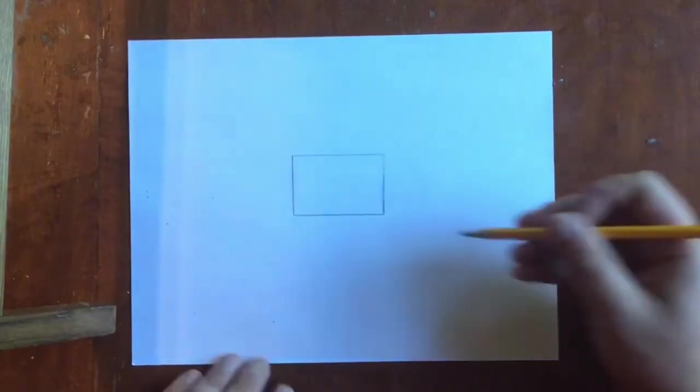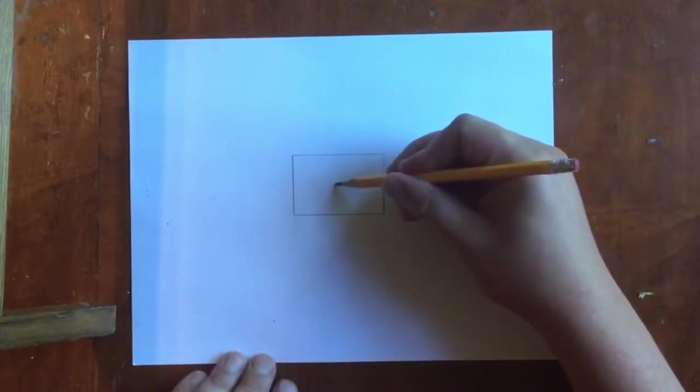The next thing we're going to do is put a dot in the middle of our paper. This is called a vanishing point.